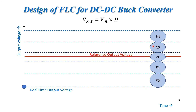Like this, we divide some ranges above or below our reference voltage and then proceed further. Let us consider the real-time output voltage — we know it can follow a trajectory where it might increase after we apply control actions and then ultimately settle to some value below the reference value.